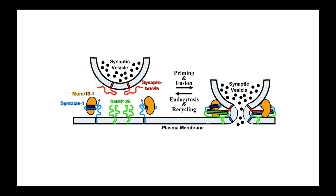These are called SNARE proteins — they pull the vesicle into the membrane. Vesicles are made of phospholipids, just like the cell membrane. When two lipid surfaces are pushed together, they fuse, creating a small opening, and the neurotransmitter gets released. I'm mentioning SNARE proteins because there are some really important toxins that target them.